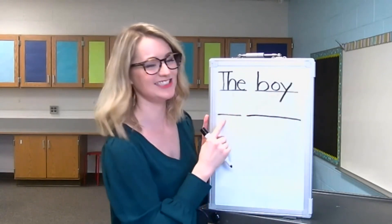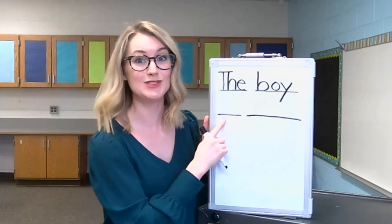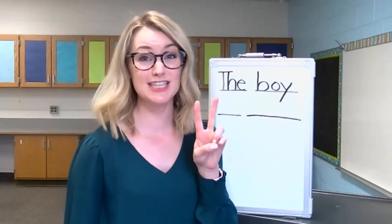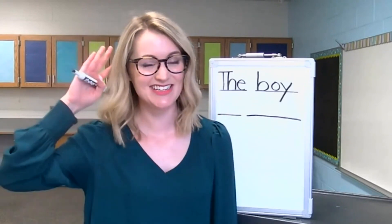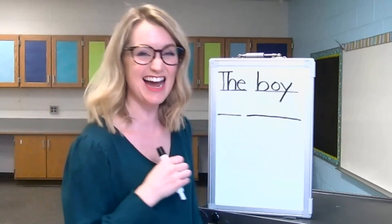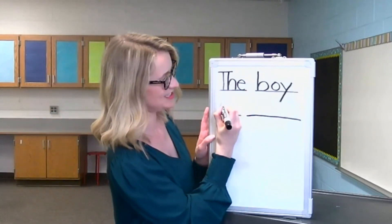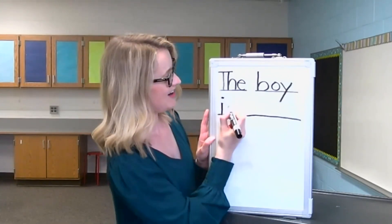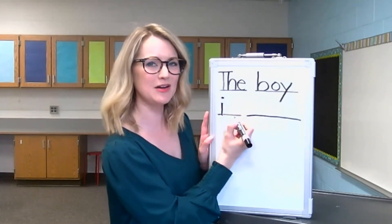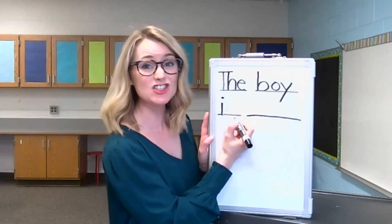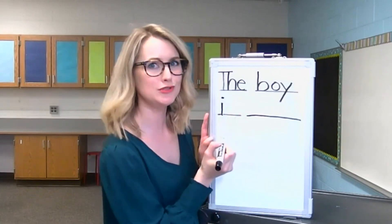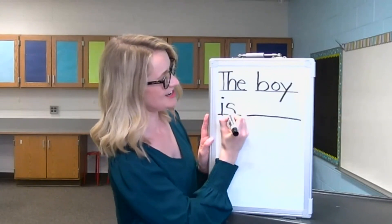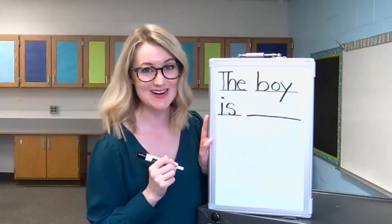Let's read what we have so far: the boy is. Let's stretch out the sounds in the word 'is.' What sound do you hear at the beginning of that word? Yes, an I sound — a short I sound. Start in the middle, go down, back up, and make a dot. Now the ending sounds like a Z, but it's actually an S — like the word 'news' has an S at the end as well. Start in the middle, around like an S.